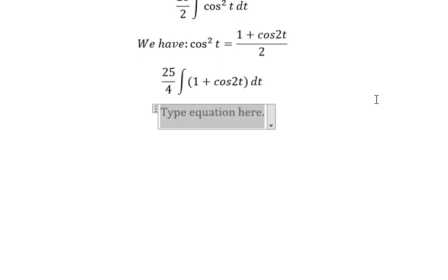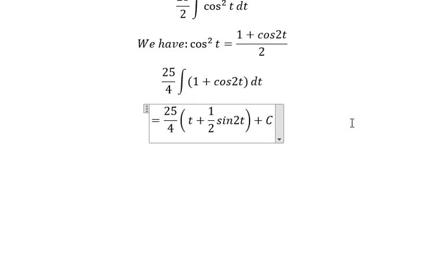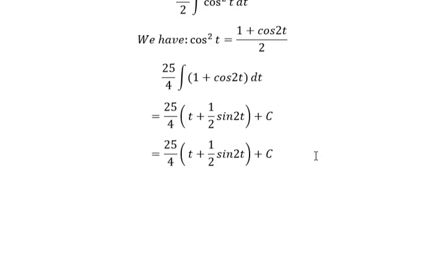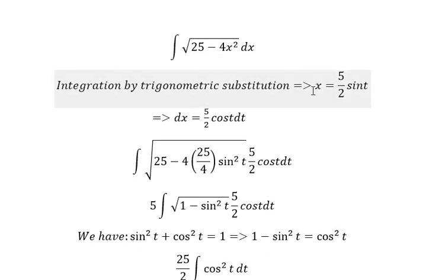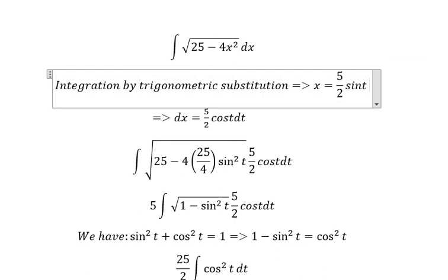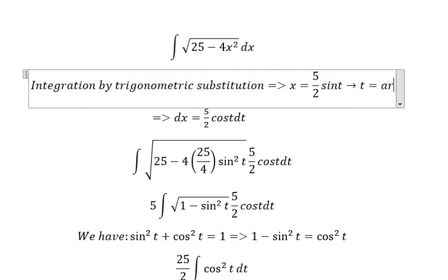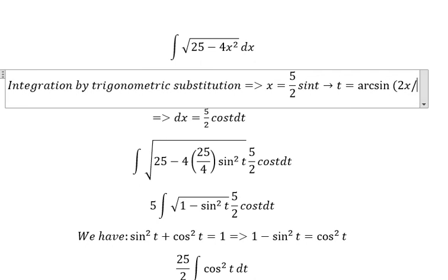Now we can get the final answer. The integral of 1 is t, the integral of cos(2t) we got 1/2 sin(2t). Now we need to change t back to x, so t is equal to arcsin(2x/5).